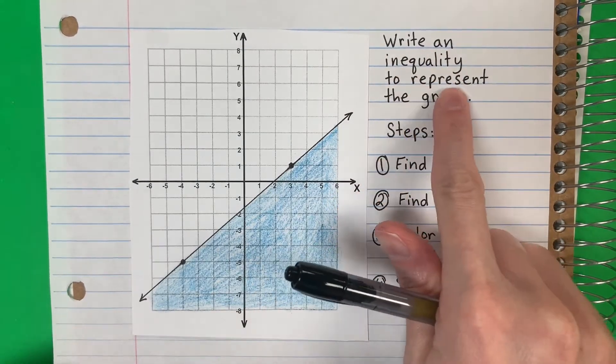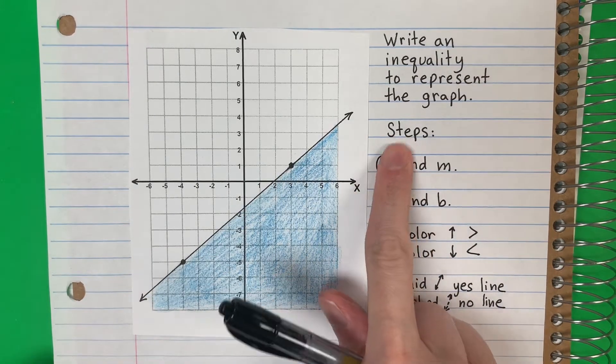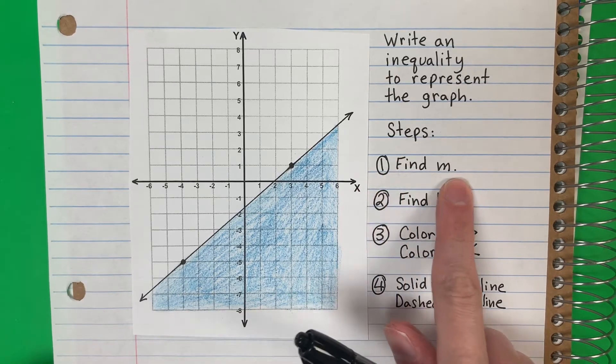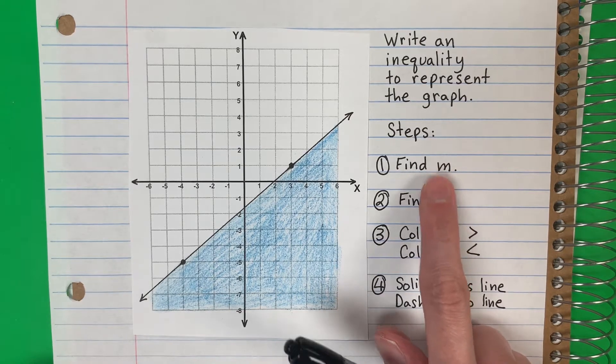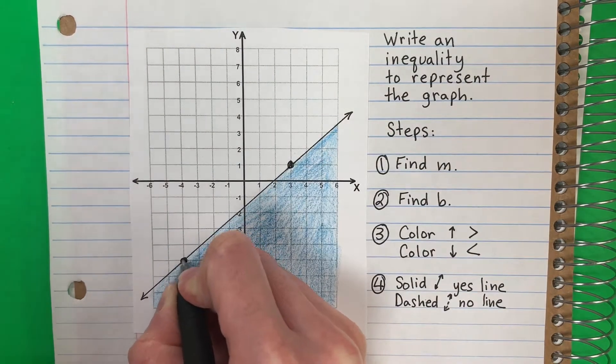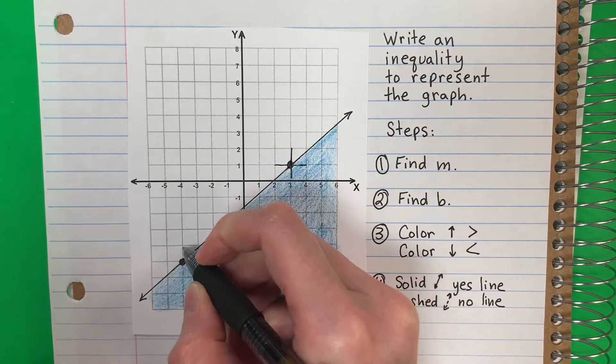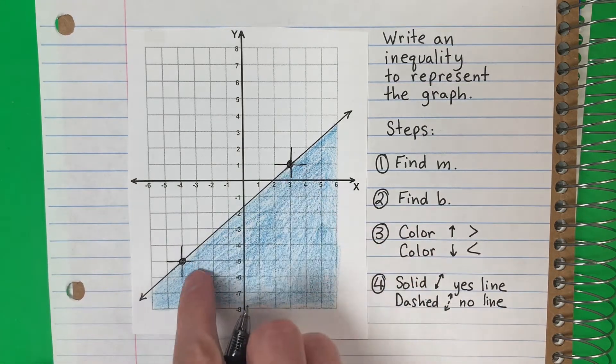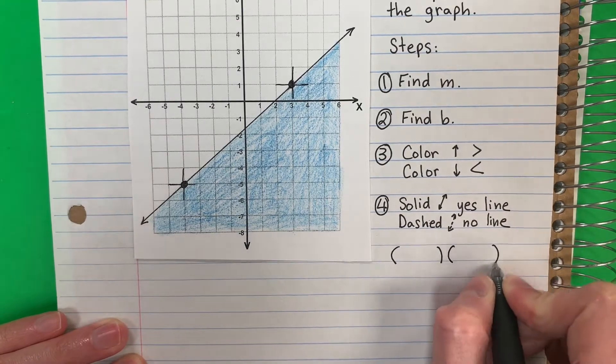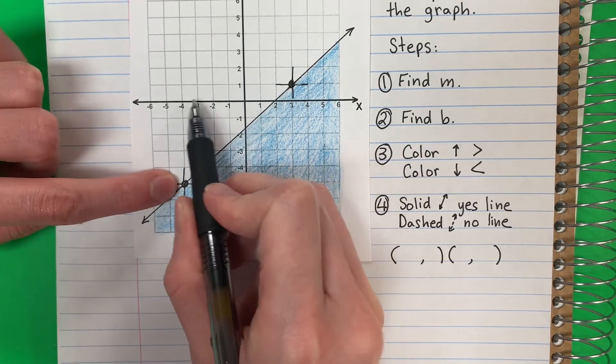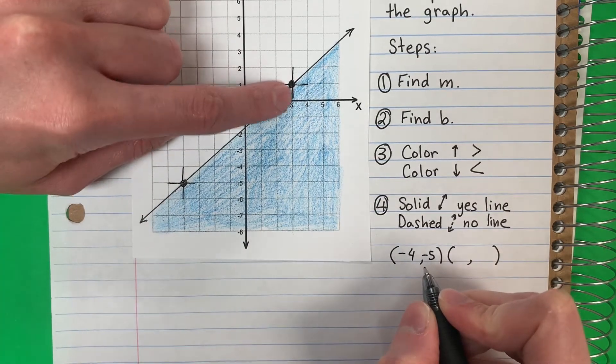Write an inequality to represent the graph. So I have a graph here and I need to make an equation. Here are my steps: Step one, find m. I need to find the slope first. To do that I need two points - necesito dos puntos para encontrar el slope m. I have some points here and they are in a corner, right in the middle. They're in a corner. So let's go ahead and write the ordered pairs. This is negative 4, negative 5, and this one is 3, 1.